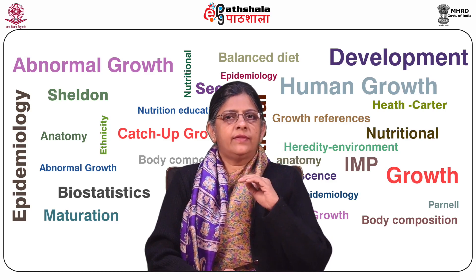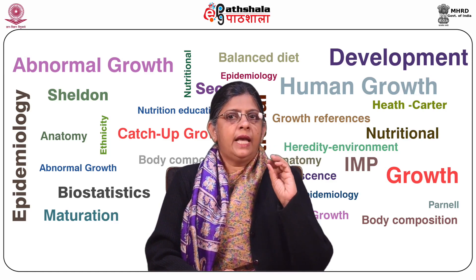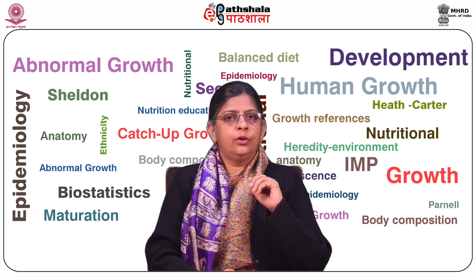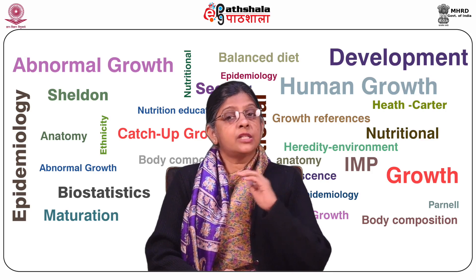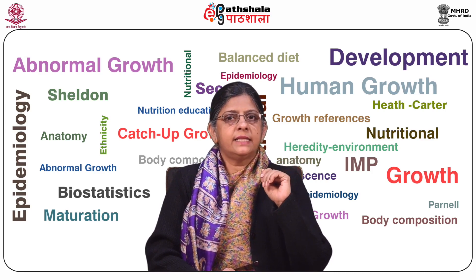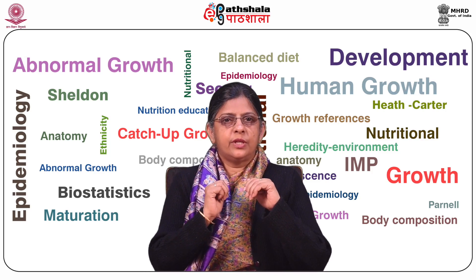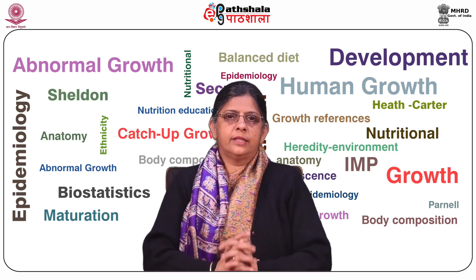Endomorphic refers to the relative fatness, mesomorphic is the relative musculoskeletal robustness, and ectomorphic is the relative linearity or slenderness of a physique. These numbers give the magnitude of each of the three components. Any component with a rating of half to 2.5 is considered low, 3 to 5 as moderate, 5.5 to 7 as high, and 7.5 and above as very high. The rating is phenotypical, based on geometrical size dissociation, and applicable to both genders from childhood to old age.